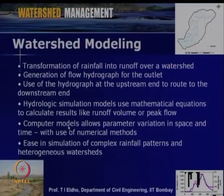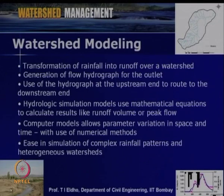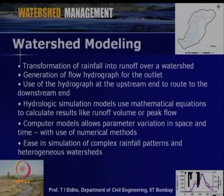The main purpose is simulating complex rainfall patterns by considering the various heterogeneity of the watershed. Various parameters within the watershed are heterogeneous, varying from one point to another. We have to consider all these aspects and develop a computer model — for example, for rainfall to runoff. For a given rainfall at the outlet of the watershed, we identify how much runoff will occur, so that watershed management measures can be undertaken. This is the main purpose of watershed modeling.